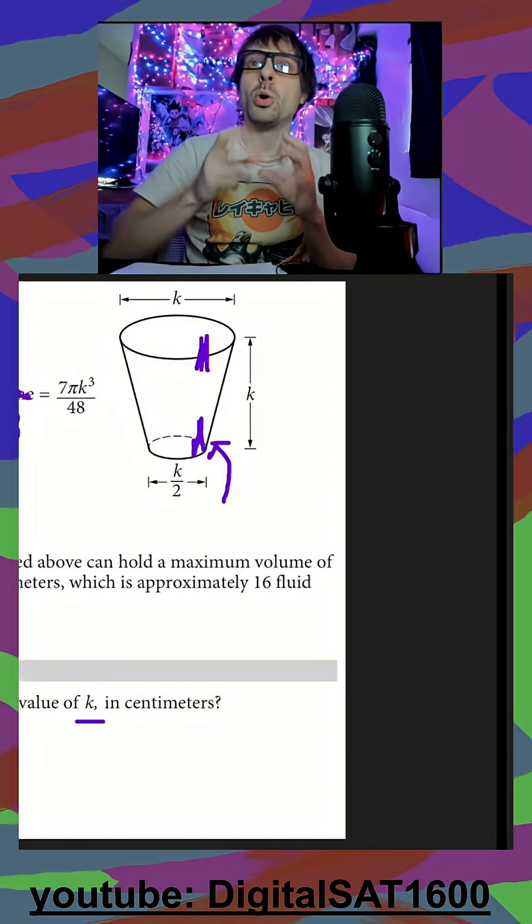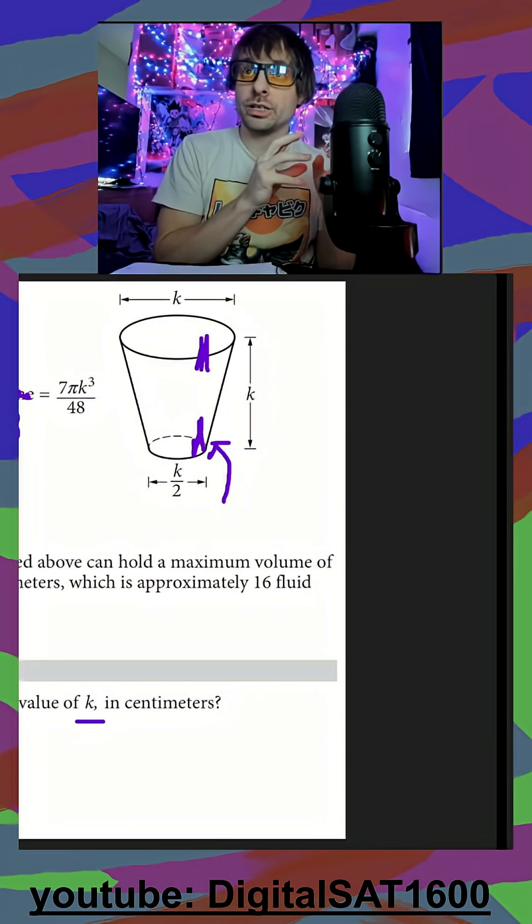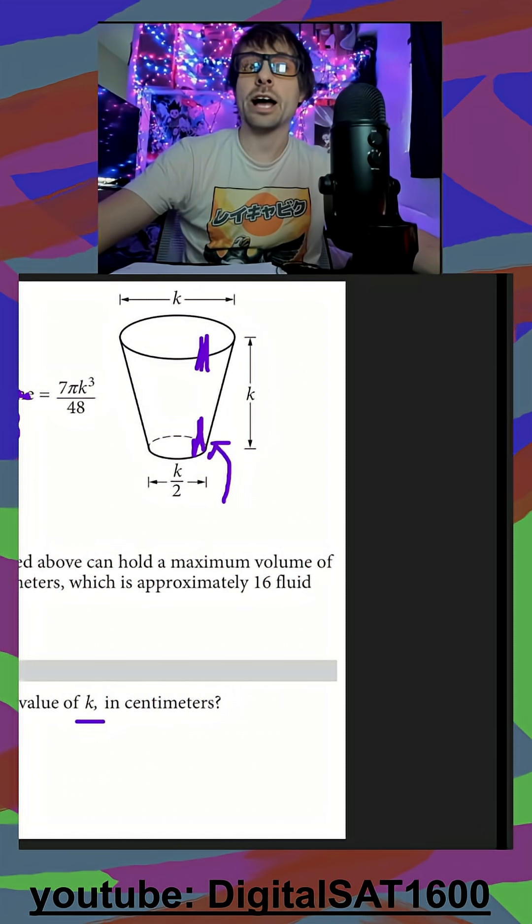So what we should see is something that's more exponential. It's faster early on, and then it kind of slows down as the cup gets wider and wider, right?